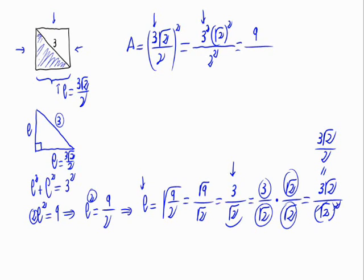This is equal to 9 times 2 divided by 2 squared, that is 2 times 2. So, we can simplify this. This would be the same as 9 divided by 2, and this would be the area of the square given.